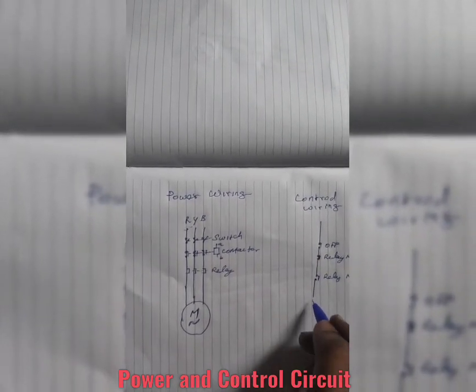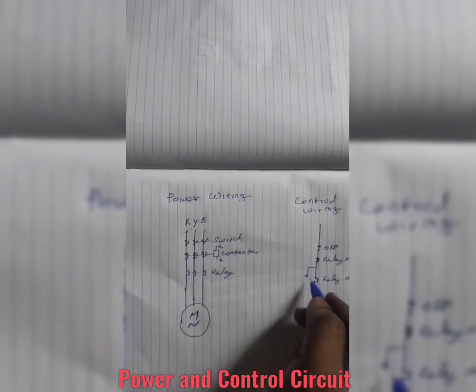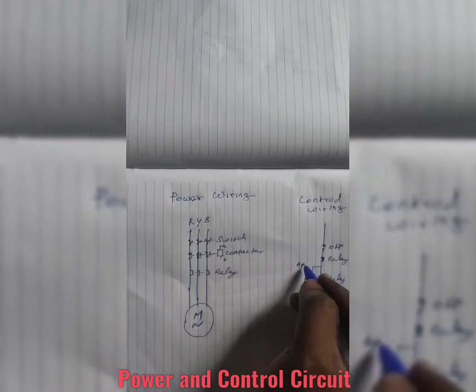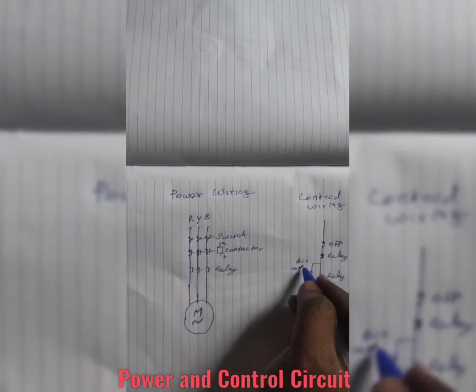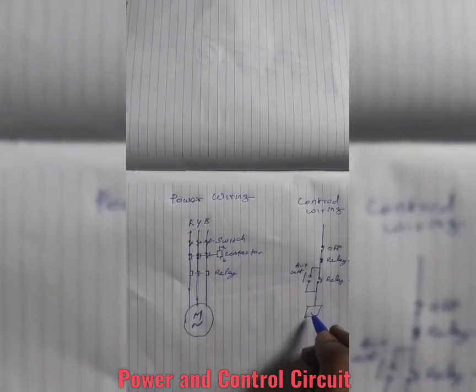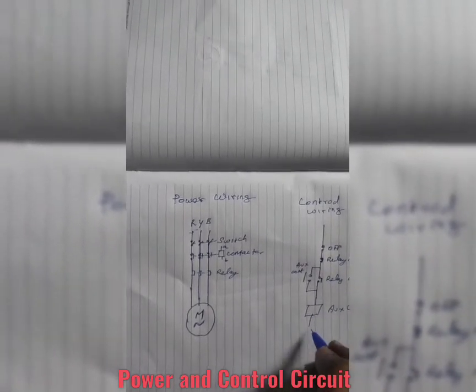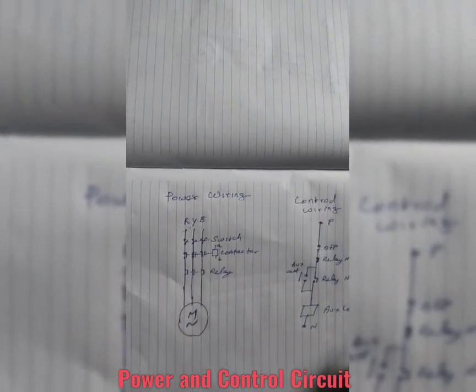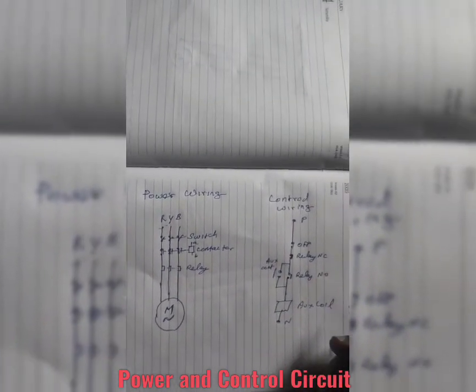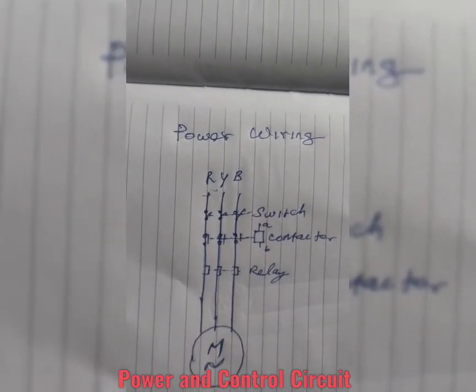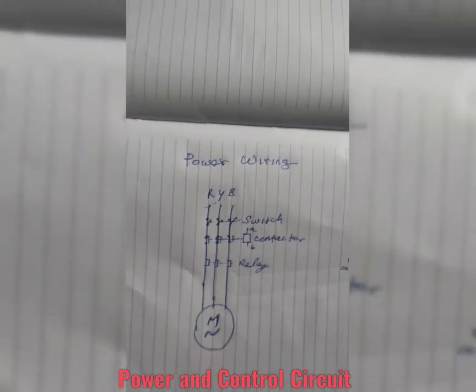This control circuit controls the contactor provided in the power circuit to the motor. We can control that contactor as our requirement. Here in a simple circuit we take phase and neutral. In case neutral is not available, we have to take two phases, then we have to use auxiliary coil.